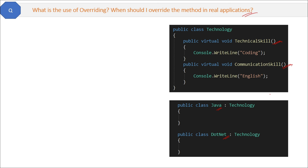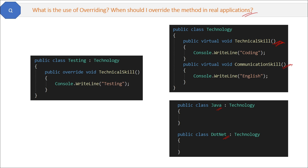The technical skill — coding — is a skill required for both Java and .NET technologies. But suppose tomorrow you want to create a class called Testing. You want to inherit the technology base class, and you need the communication skill method of the base class as it is. However, you do not want coding as the technical skill method.